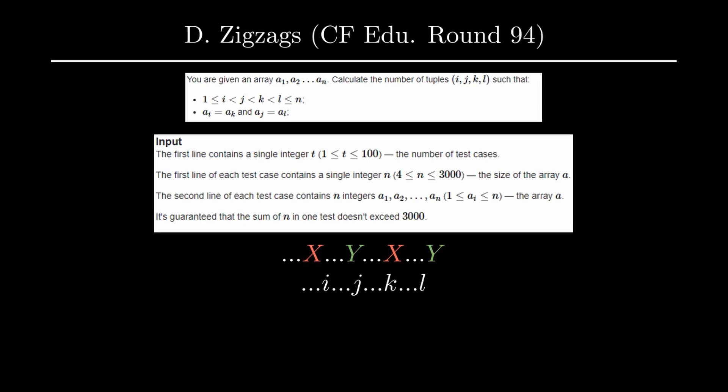By brute forcing over the middle two indices we easily have a prefix count and a suffix count. Our problem is now reduced to fetching the count or number of occurrences of a particular number in a prefix of the array and a suffix of the array. Since all elements are between 1 and n, we can maintain a 2D prefix array where prefix[i][j] stores the count of number i in a prefix of length j of array a.